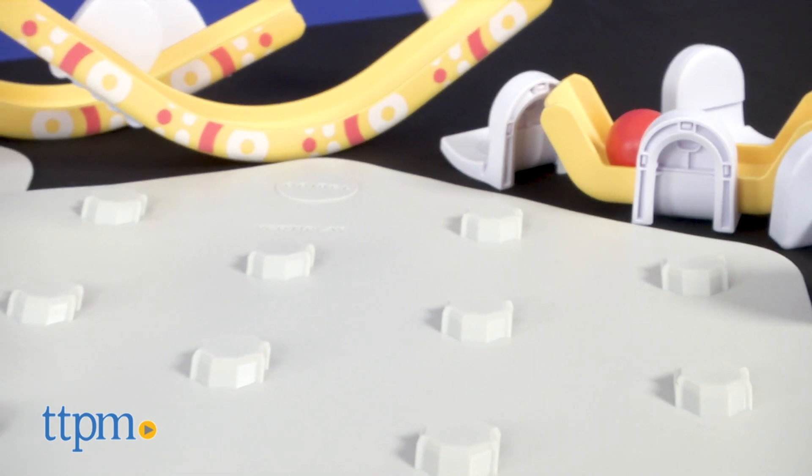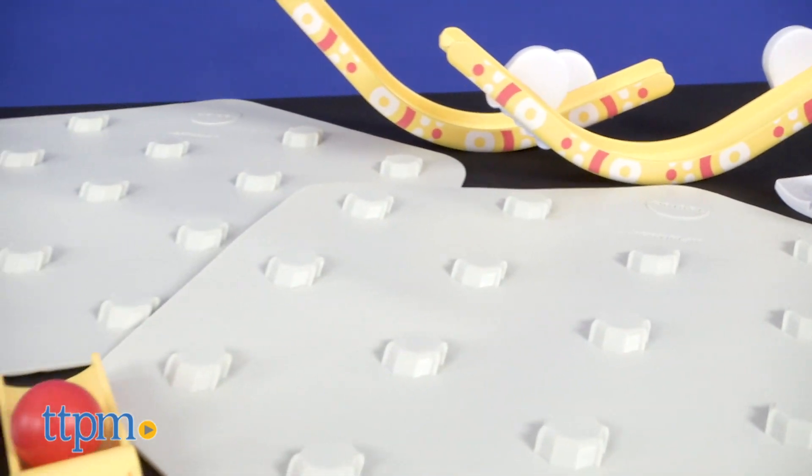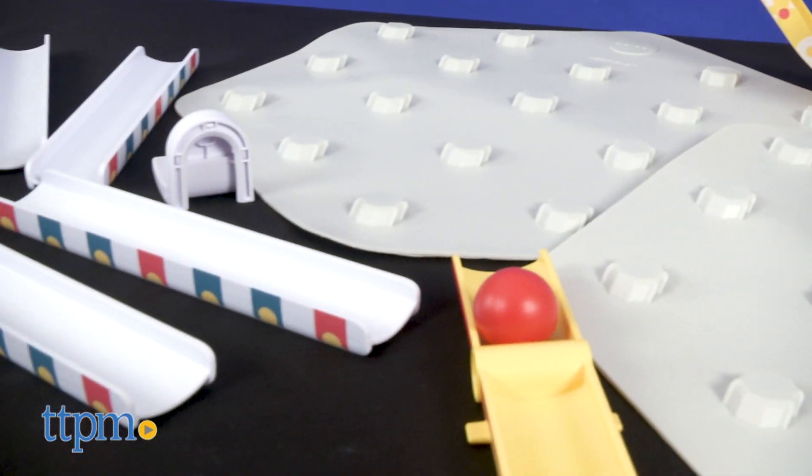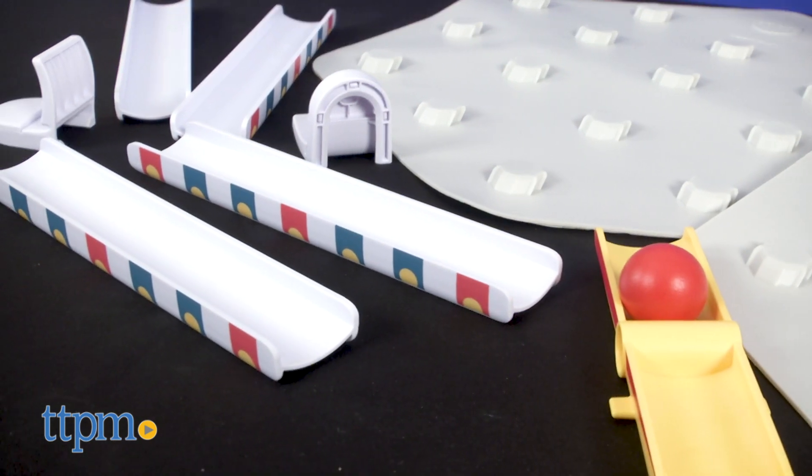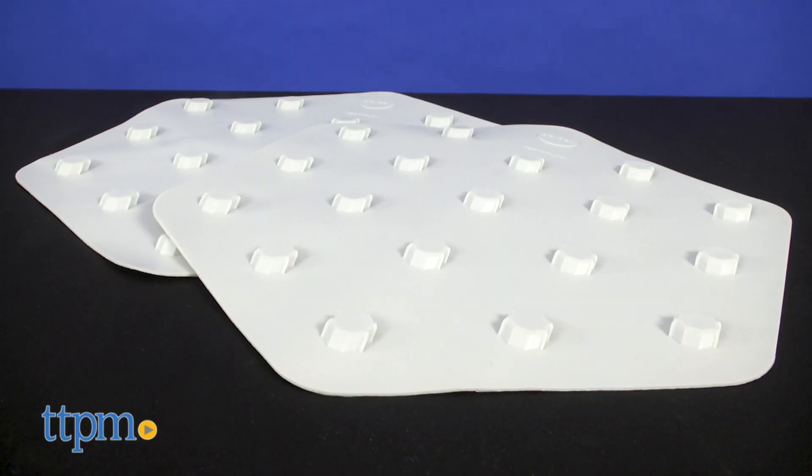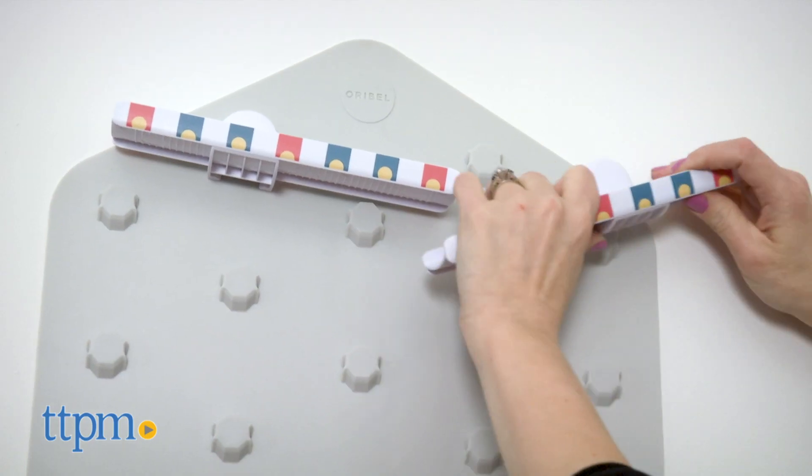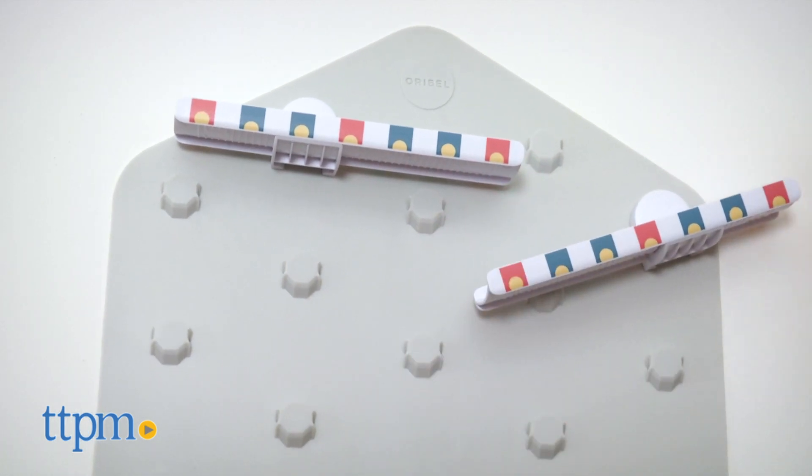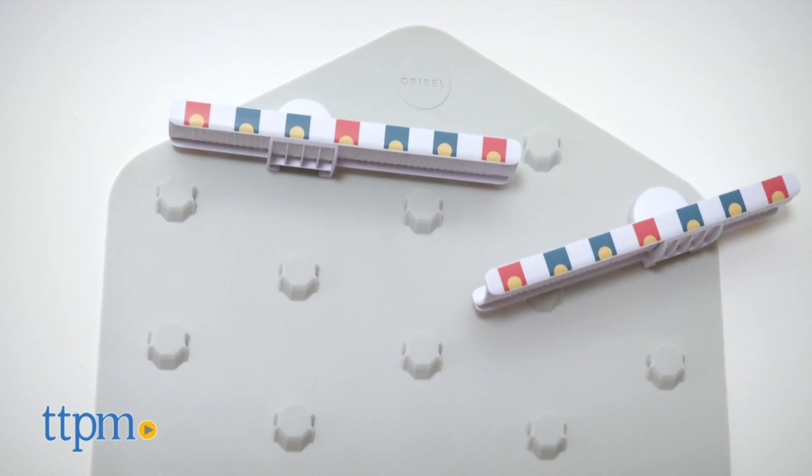Instead of building out a marble run set on the floor, the system sticks to your wall. And stick around by hitting the subscribe button below so you never miss out on the latest and greatest toys. With neutral silicone baseboards and colorful patterned track pieces, this blends in with your home's decor and gets toy clutter off the floor.